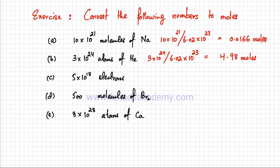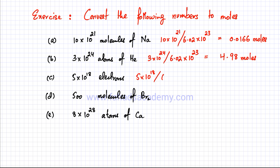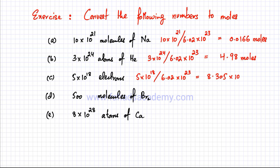For part (c), I have 5 × 10¹⁸ electrons — 5 followed by 18 zeros, written in standard form. To convert that into moles, I divide by 6.02 × 10²³, and the answer is 8.305 × 10⁻⁶ moles.